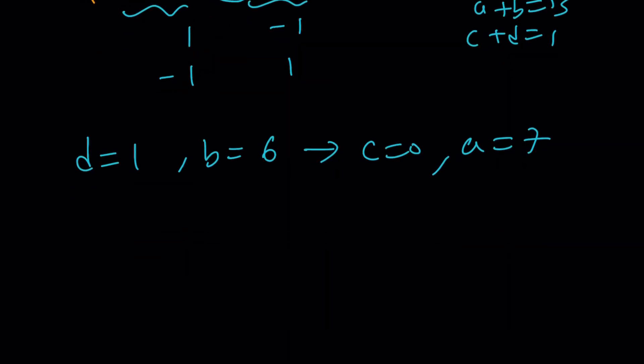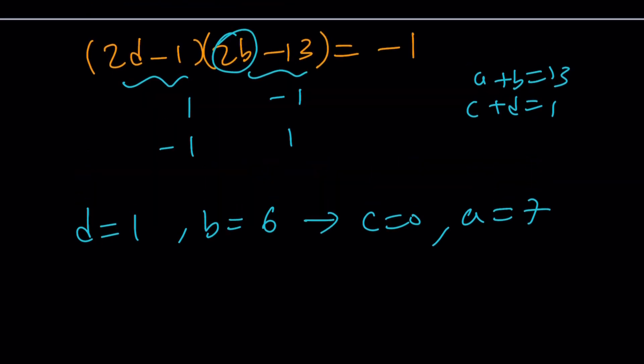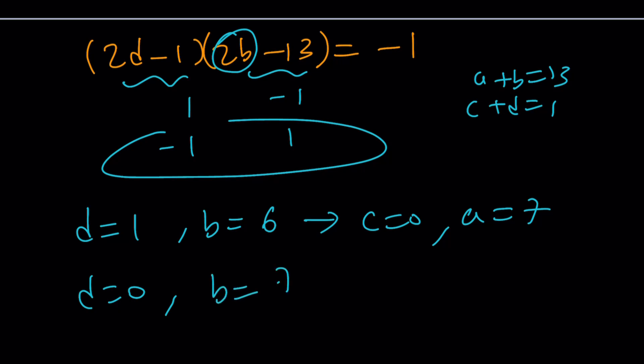So, now, we do know that if D is 1, then C is 0. And, if B is 6, A is 7. So, this gives us an ordered quadruple, which I'm going to write a little later. And then from the second case, if 2D - 1 = -1, that means D = 0. And if 2B - 13 = 1, that means B = 7. So, they kind of switch around. From here, if D is 0, C is 1. If B is 7, then A is 6. So, they are interchangeable in that sense.